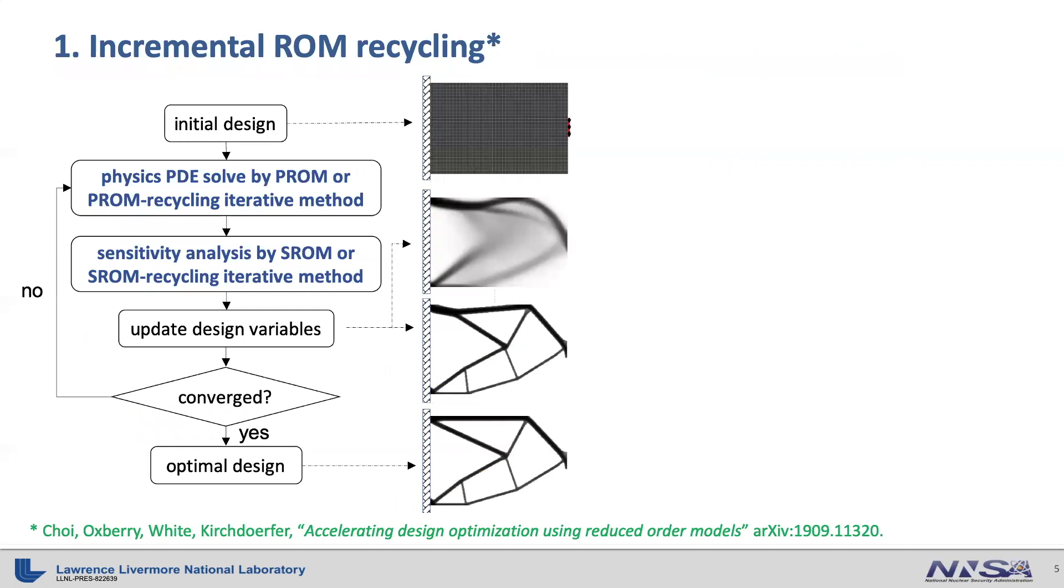The first one is the incremental reduced order model recycling. The motivation is very simple. Because the expensive part of design optimization is physics PDE solve, we replace the physics PDE solve with reduced order model solve, the same thing for sensitivity analysis. By the way, the ROM we are interested in building is data-driven. That implies that we cannot apply ROM in the beginning of the optimization process, simply because we do not have data to build any reduced order model. So we start with full order model in the beginning and use the solution to build an initial reduced order model.